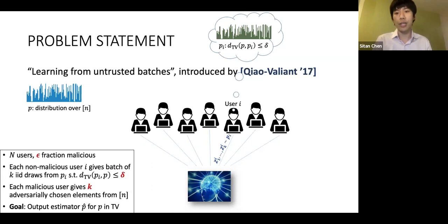I don't know which users are malicious or not malicious, but my goal is still to output some estimator p-hat for the true distribution which is close in total variation.